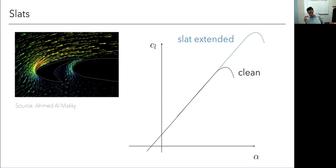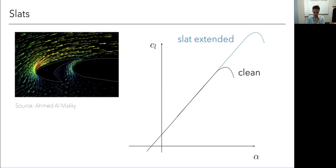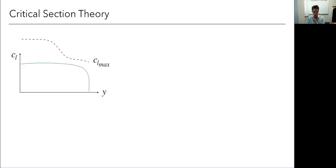Using flaps and slats in combination, both shift and extend the lift curve. The combination means I can get to a higher CL_max and reach that higher CL without increasing angle of attack too much, which is desirable for takeoff and landing. This is a really helpful technology for large airplanes - change the geometry for takeoff and landing, then fold back to a clean low-drag configuration for cruise.